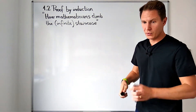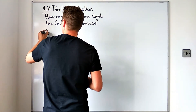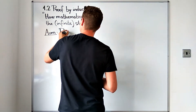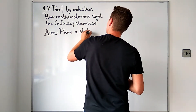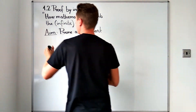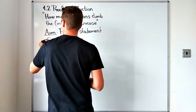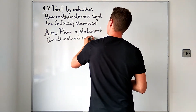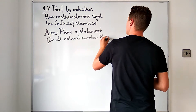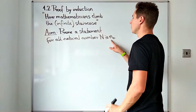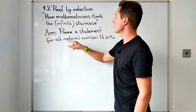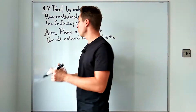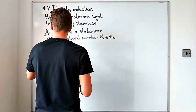Our aim is to prove a statement for all natural numbers that are greater than or equal to some fixed natural number n sub zero. So we have a statement for each natural number capital N greater than or equal to n zero, and the proof method consists of three steps.